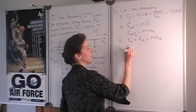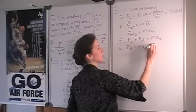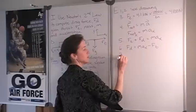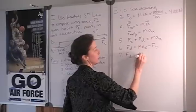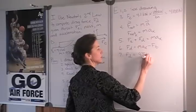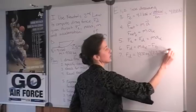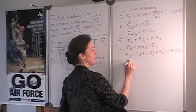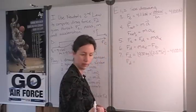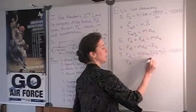Next we'll solve for the drag force then by subtracting the thrust force from both sides and substitute our values, the mass of 930 kilograms times 2.5 meters per second squared minus 4100 newtons. That gives us a drag force of negative 1775 newtons.